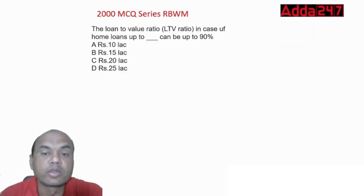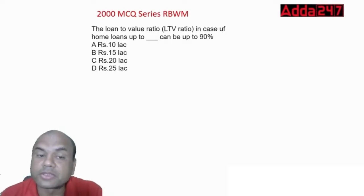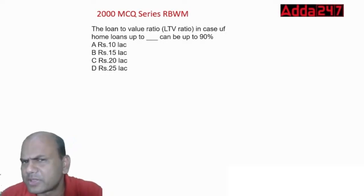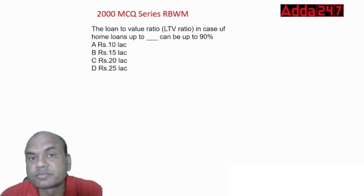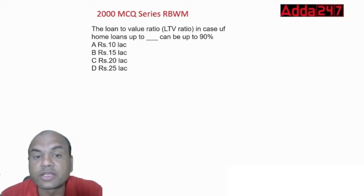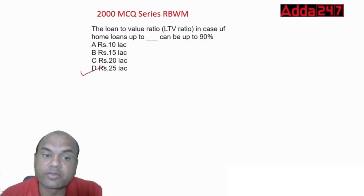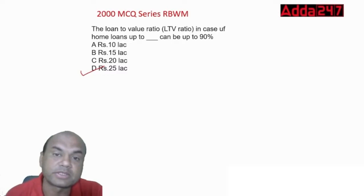The loan-to-value ratio can be 90% for home loans up to 30 lakhs as per RBI guidelines.